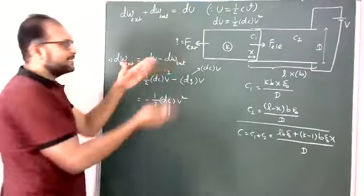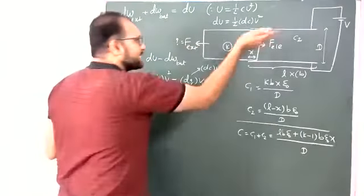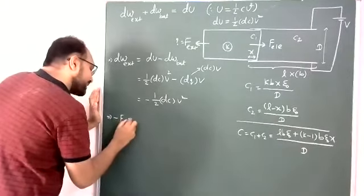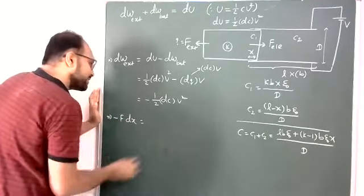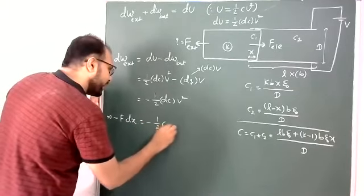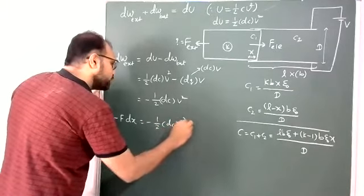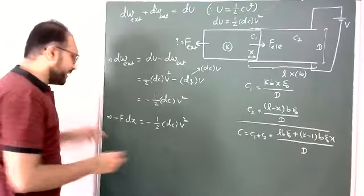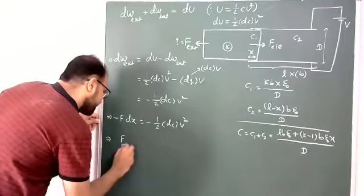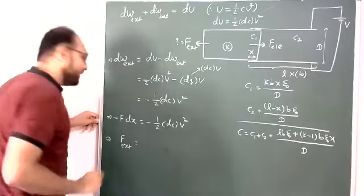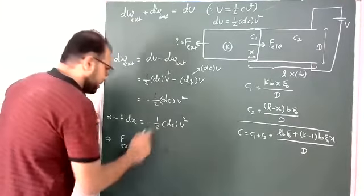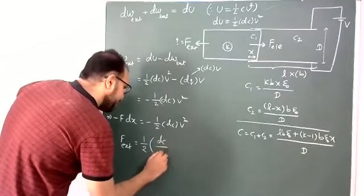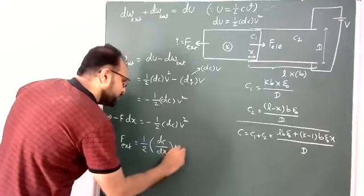Now, work done by the external agent: force is in this direction, displacement is in this direction. So minus F_external times dx equals minus half dC times V². The negatives cancel. Therefore, the external force required is half dC/dx times V².